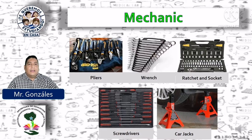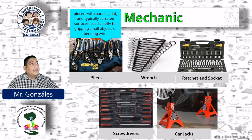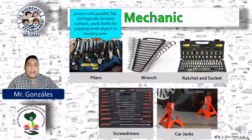Mechanic area. Pliers: pincers with a parallel, flat, and typically serrated surfaces used chiefly for gripping small objects or bending wire. Pinzas paralelas, planas, tradicionalmente con superficie dentada, usadas principalmente para sostener objetos o doblar cables.